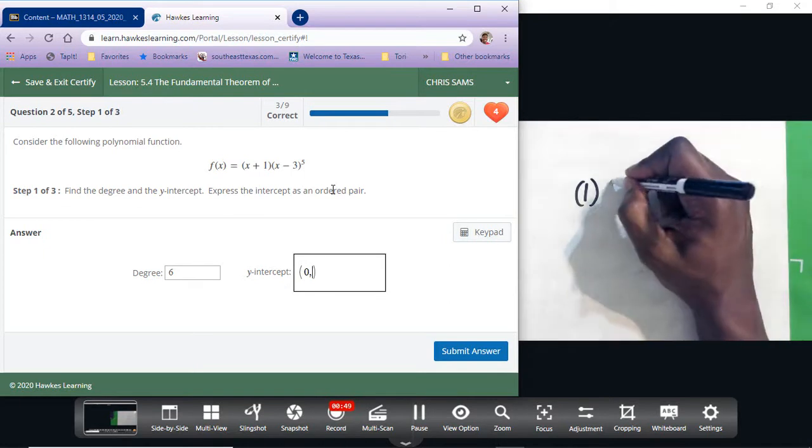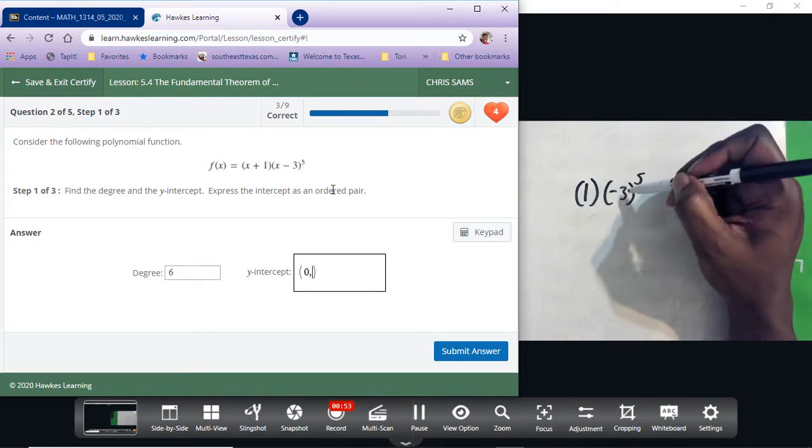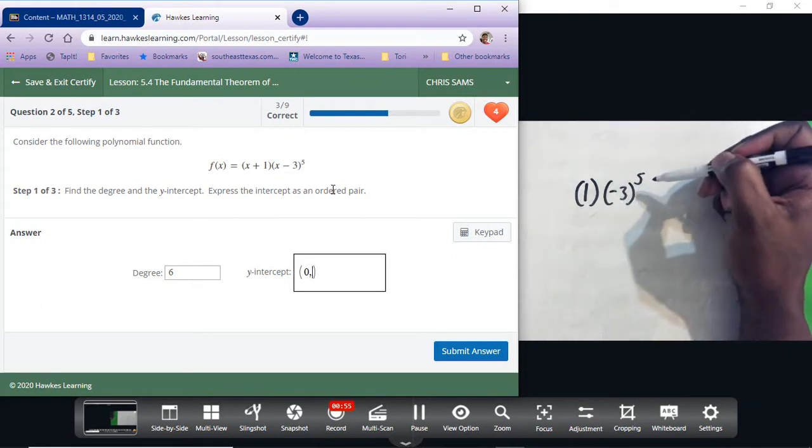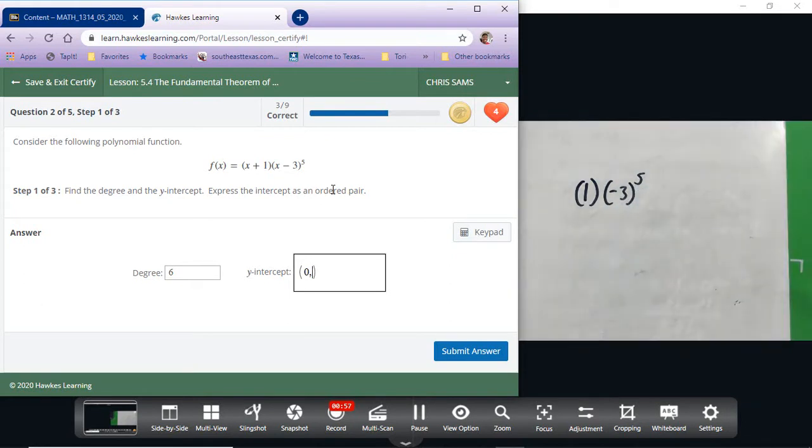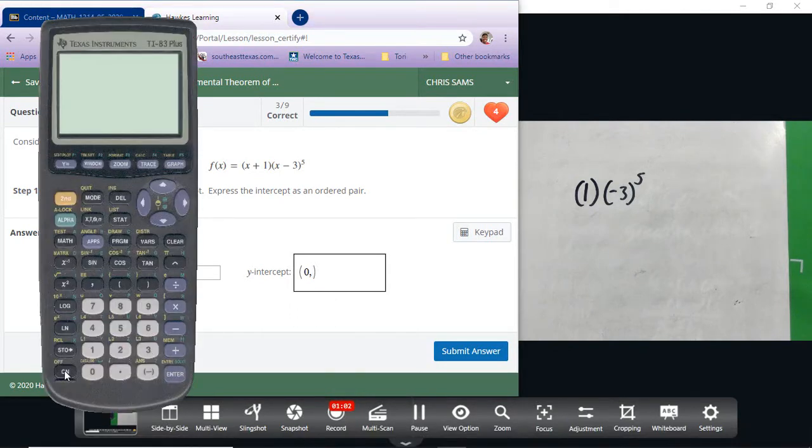So we have to do negative three times itself five times. You might not have that one memorized—that's a pretty big number—so we'll just do it with the calculator.